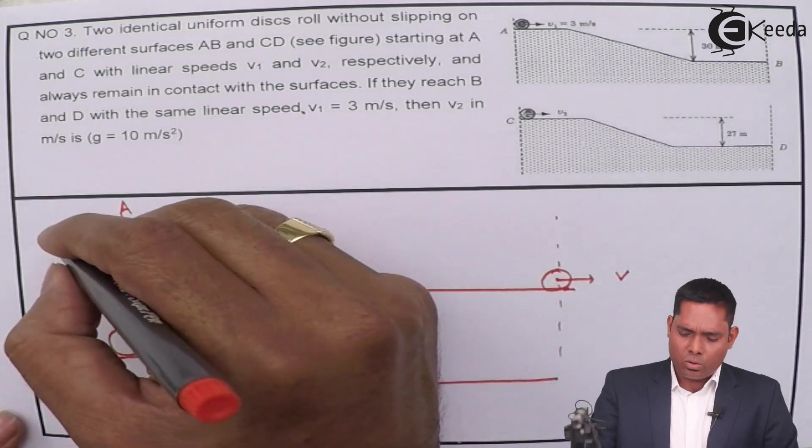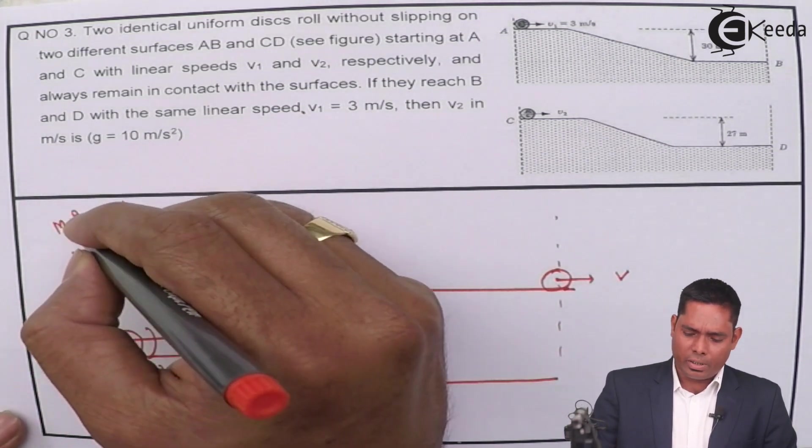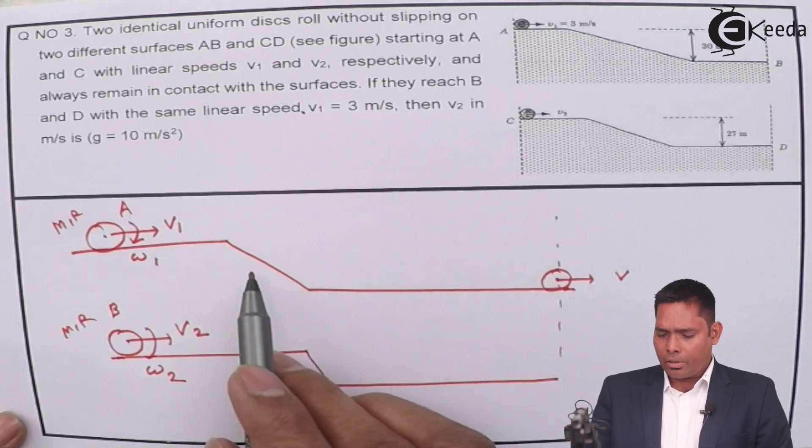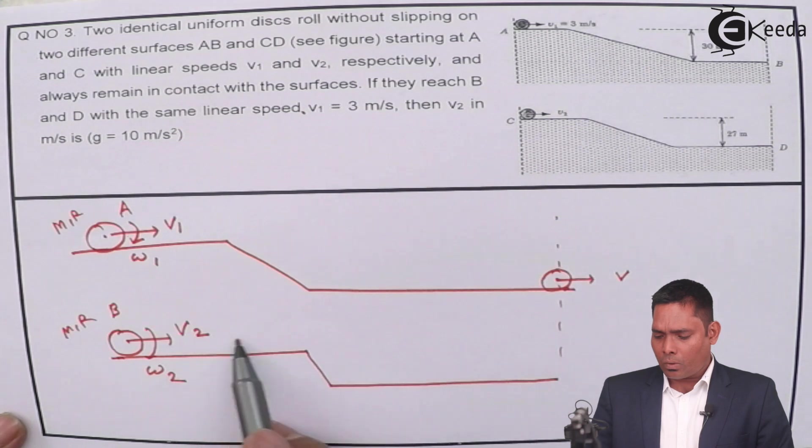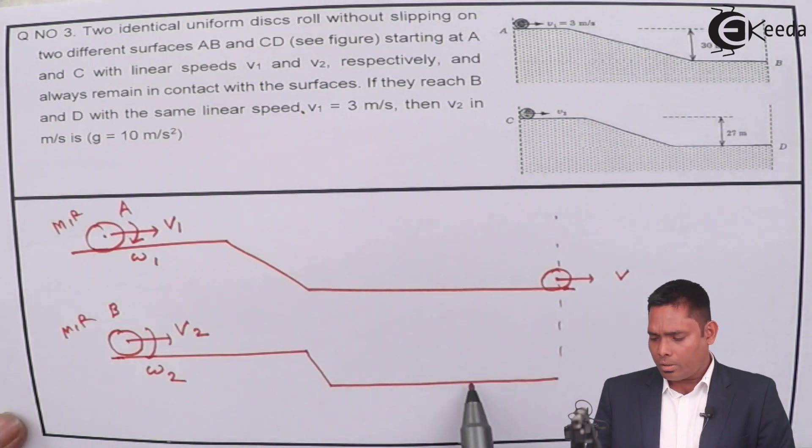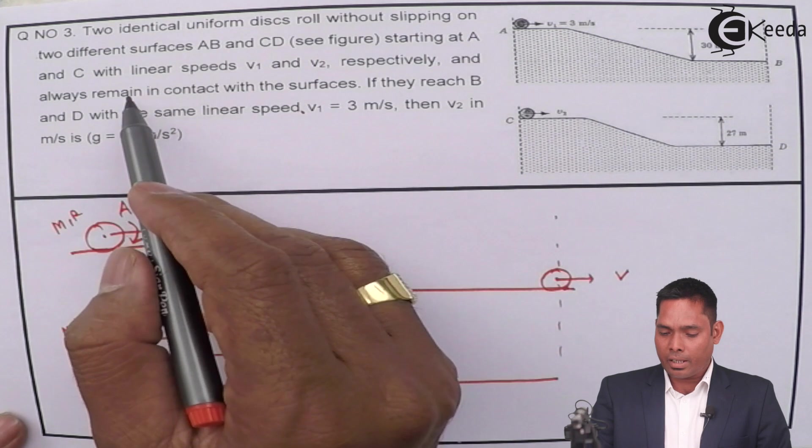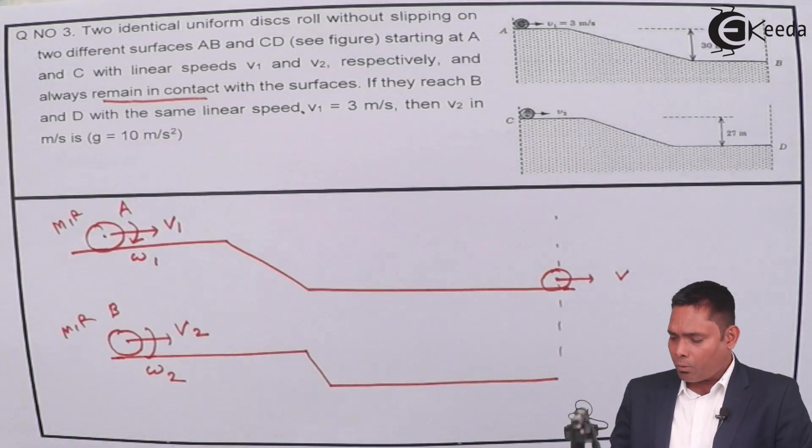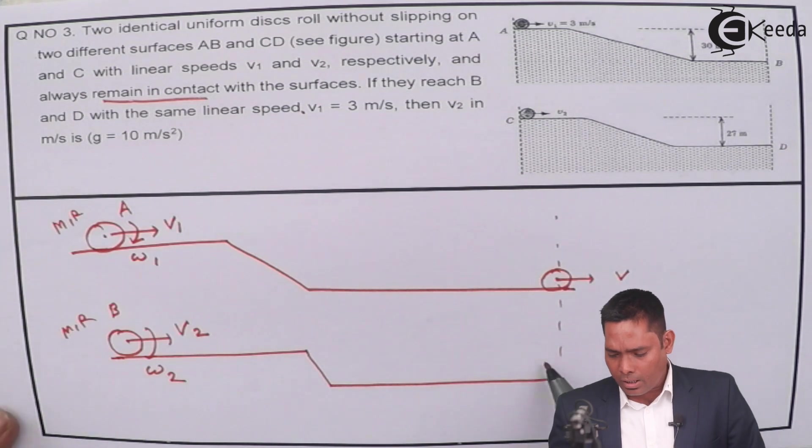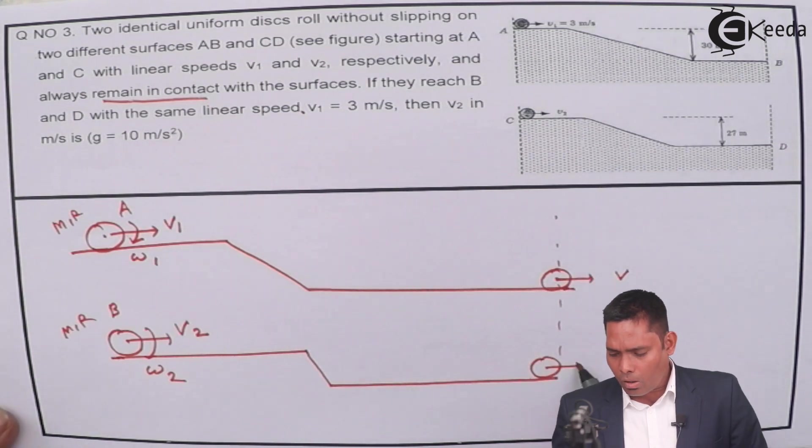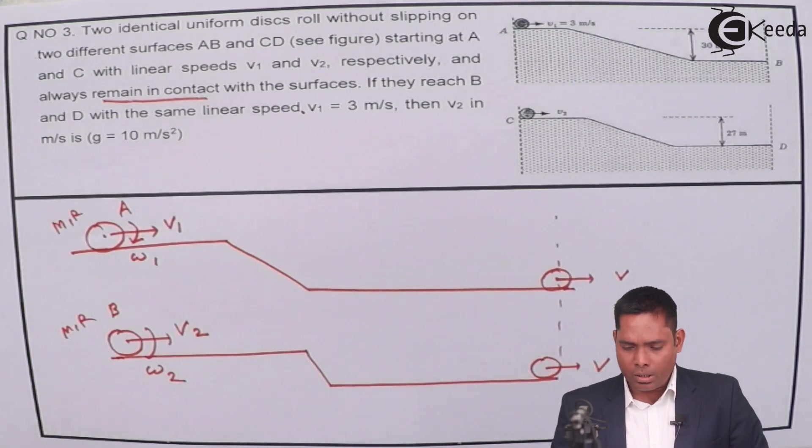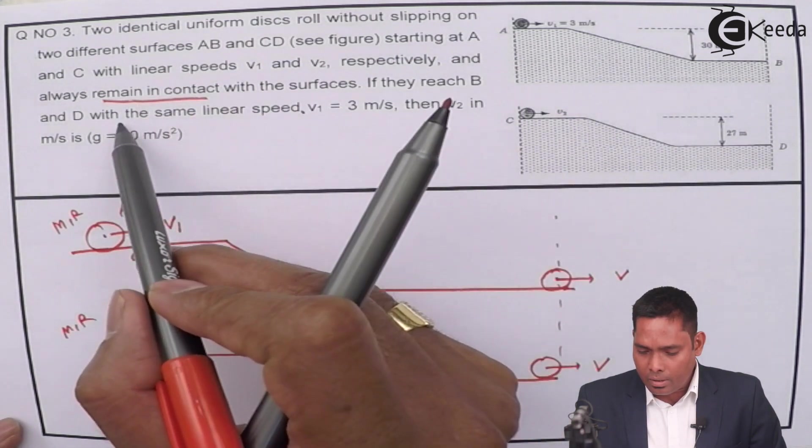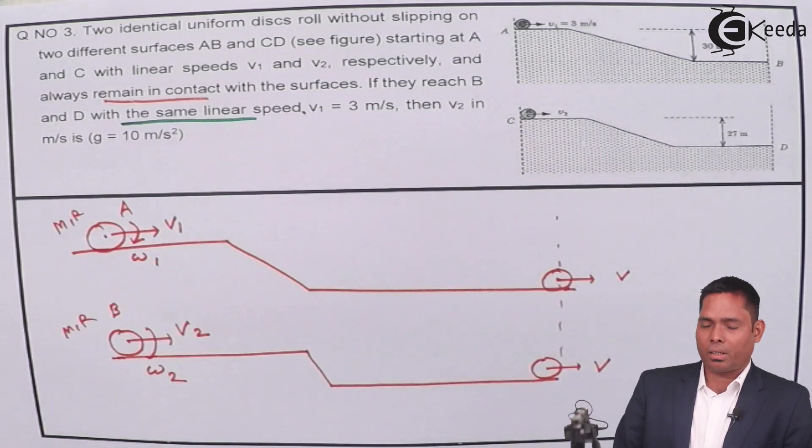For this one, this one is more slopey. This is B with velocity V2, angular velocity suppose omega 2. These are identical, so mass is M and radius is R. Then it follows this path, and this follows this path, always they remain in contact with the surface.